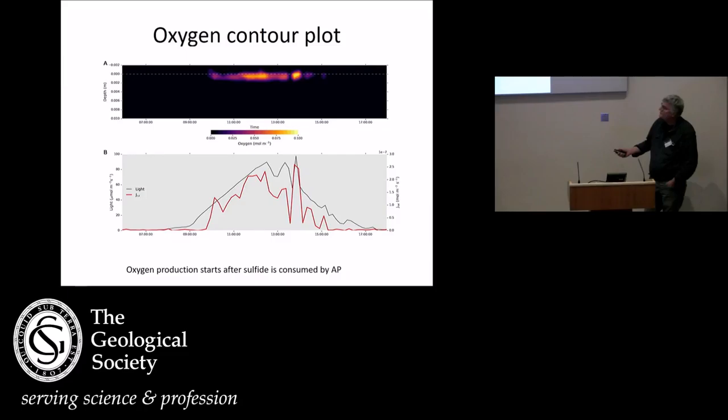This is oxygen. Oxygen is not immediately developing upon sunrise. It takes a few hours, and first, that is because first the sulfide must have been depleted by anoxygenic photosynthesis. Then oxygen can develop, and it stops pretty quickly again. So it's only four hours per day or so that we find oxygen in these mats.